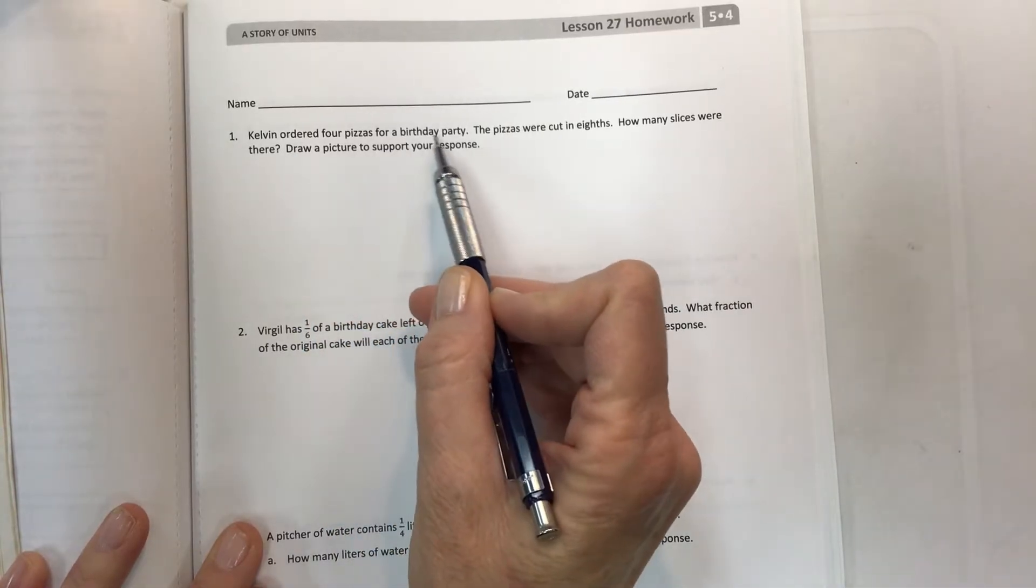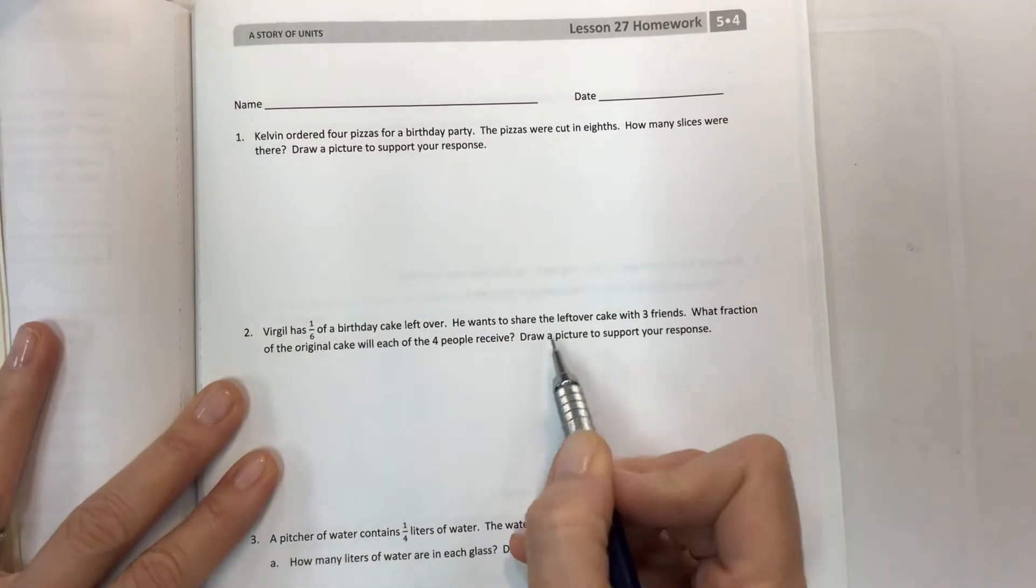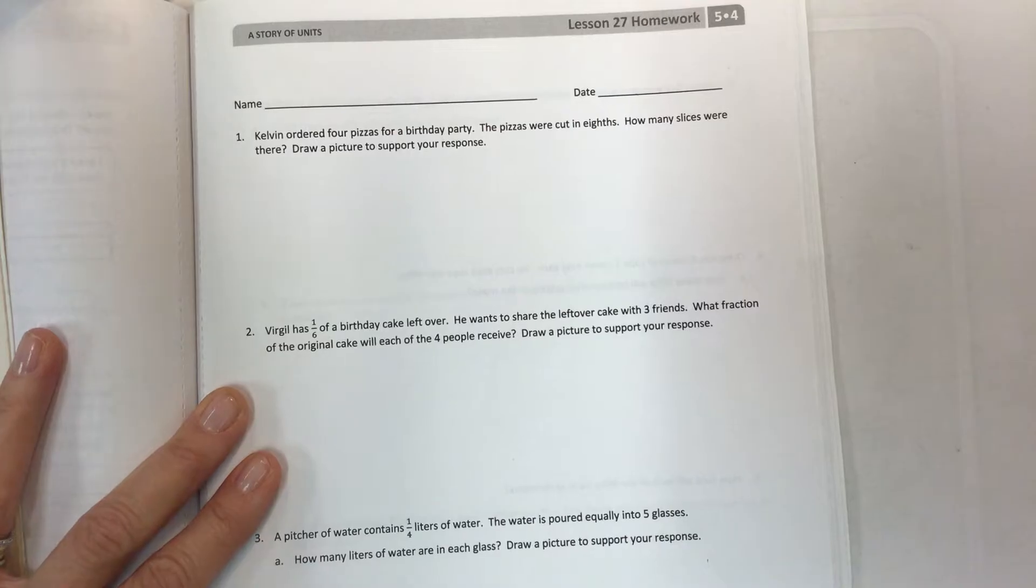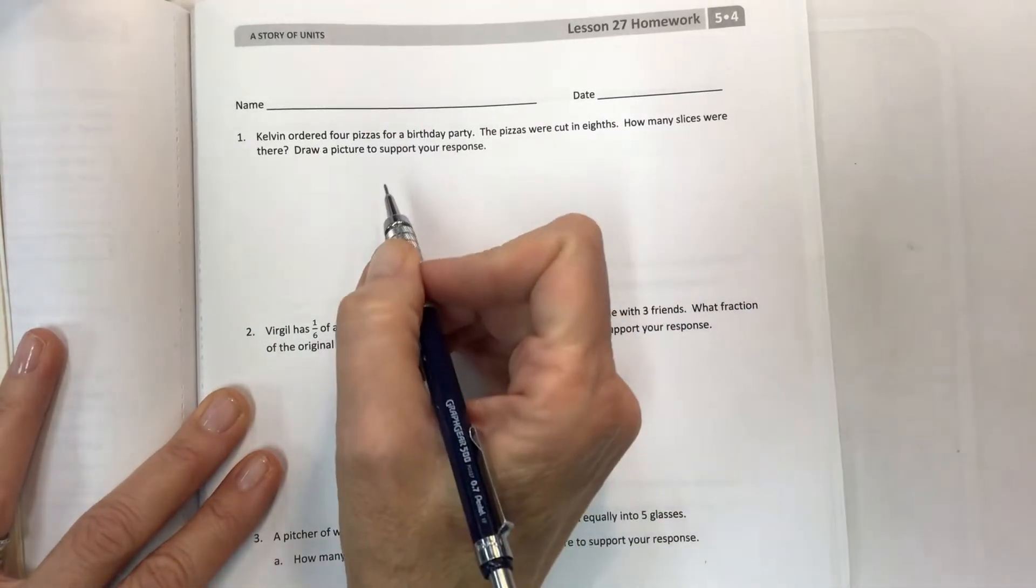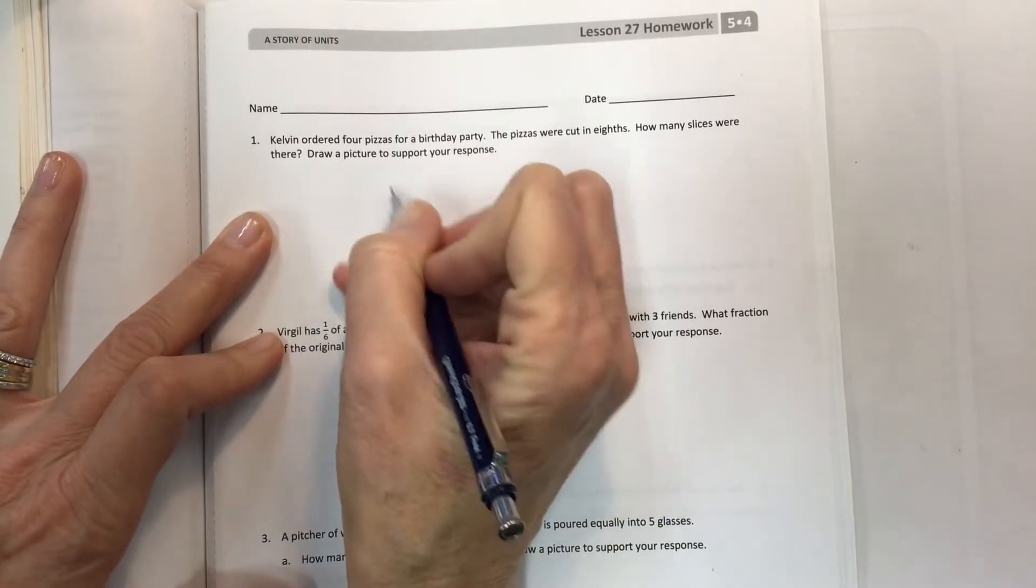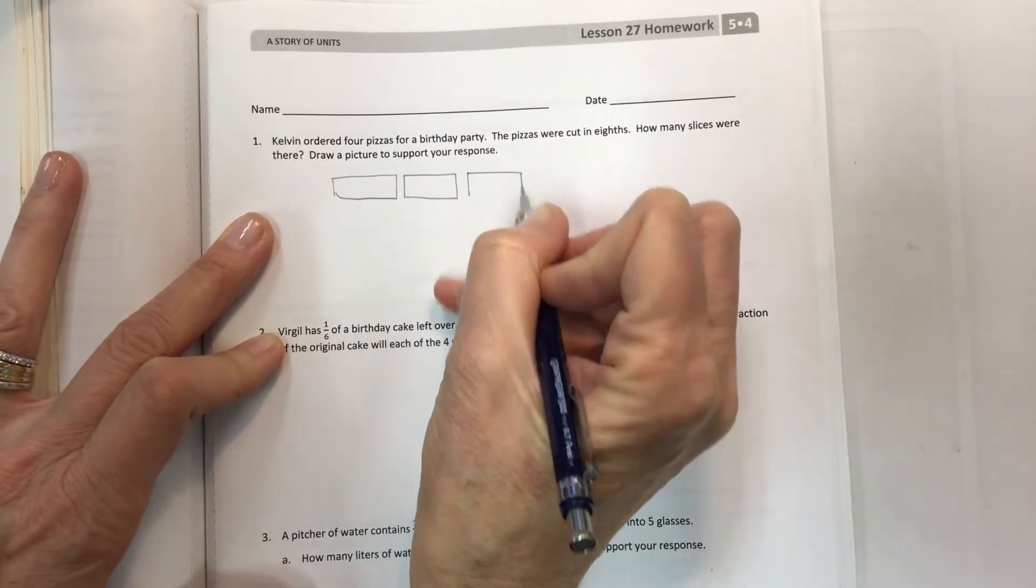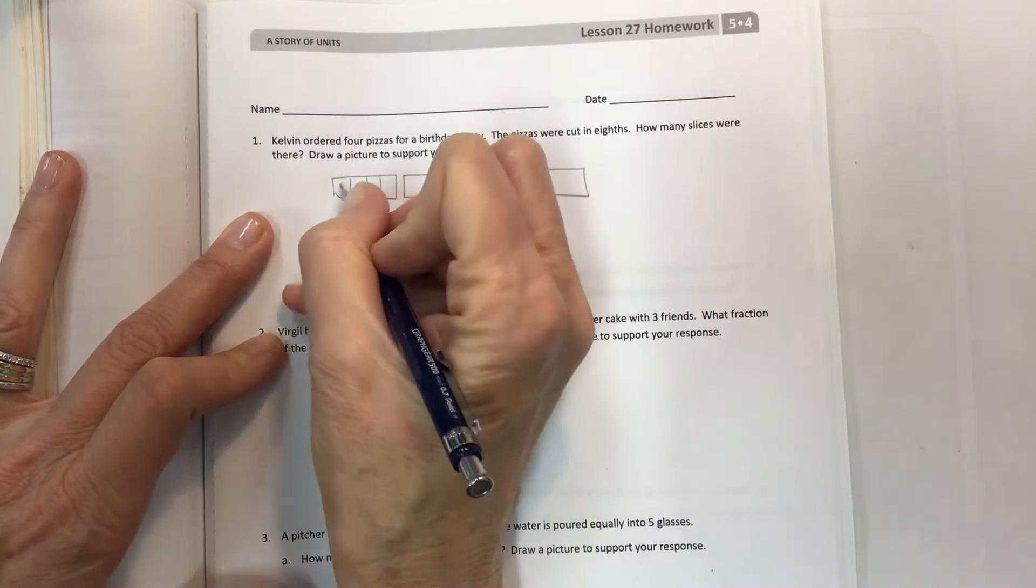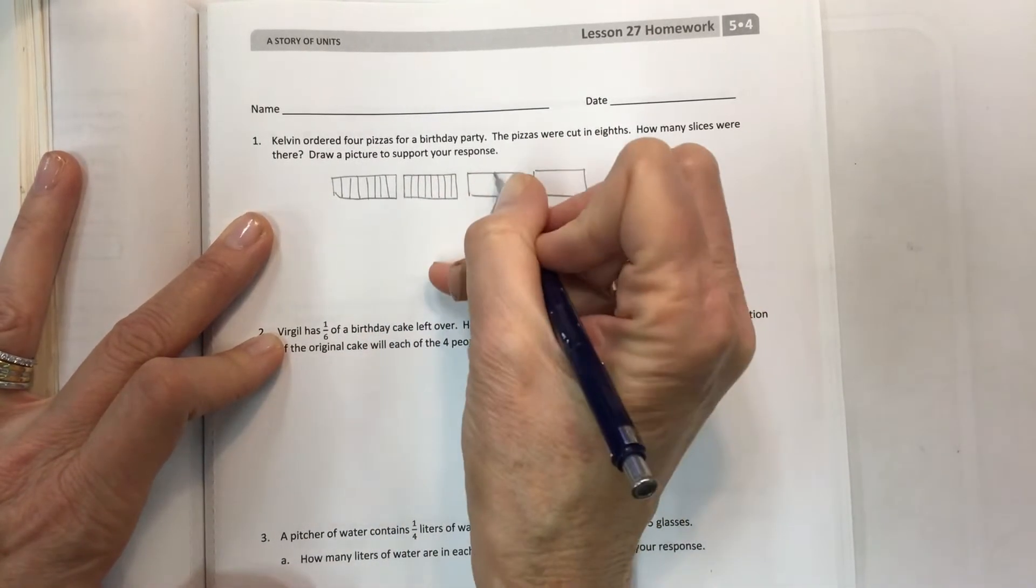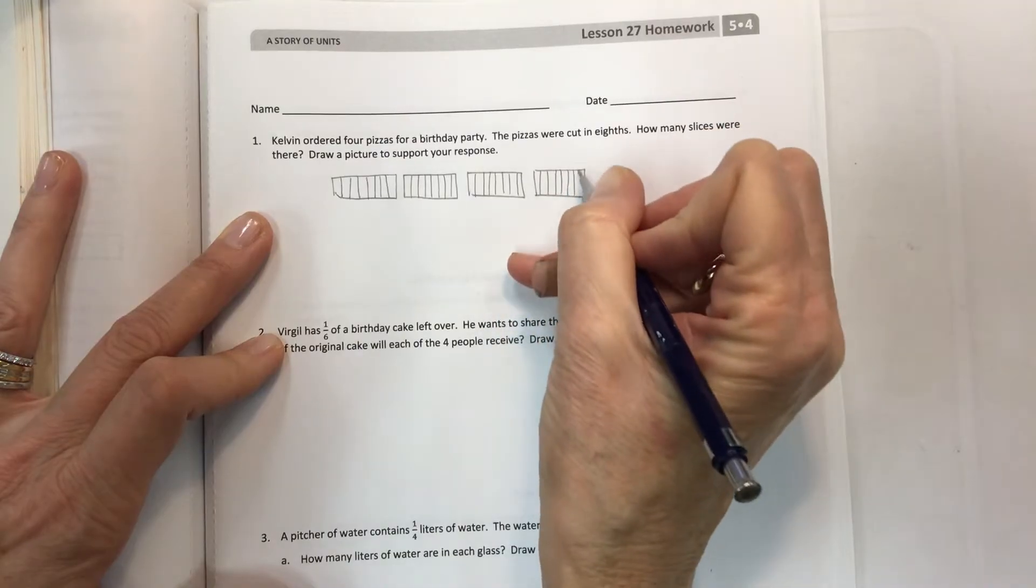Let's get started. Kelvin ordered four pizzas for a birthday party. The pizzas were cut in eighths. How many slices were there? Draw a picture to support your response. They all want us to draw a picture, that means a tape diagram. But what if you can't figure out how to do a tape diagram? Draw some pizzas. I don't mind. Your four pizzas could be four tape diagrams and they're cut into eighths. So as you create your eighths, you're creating all the slices of pizza.